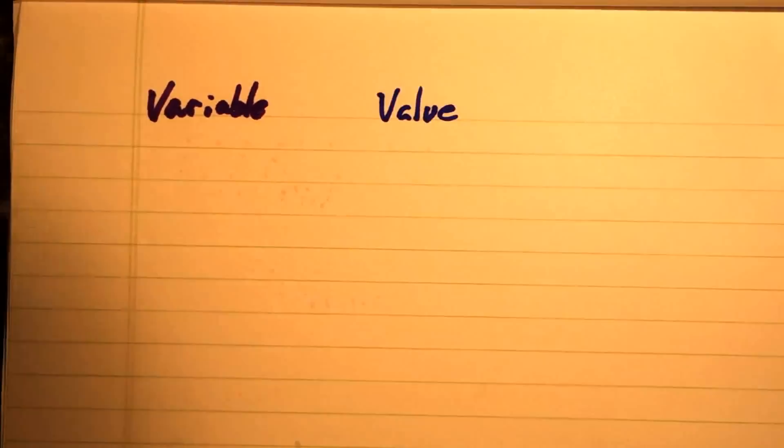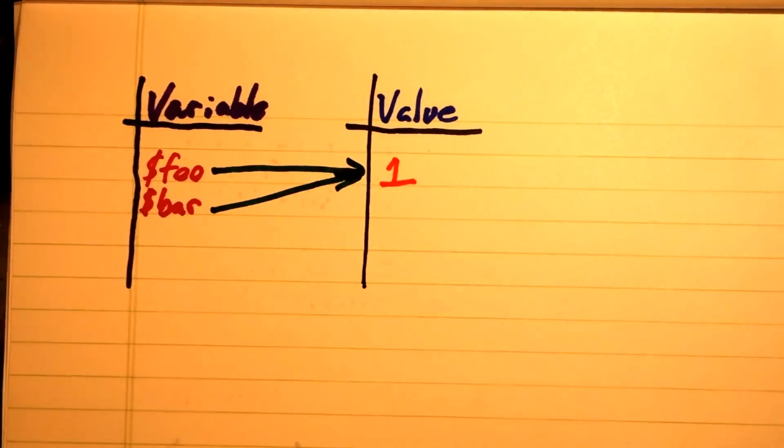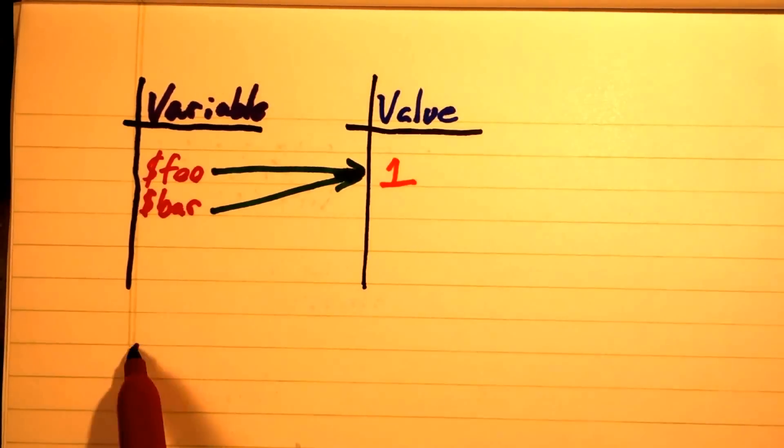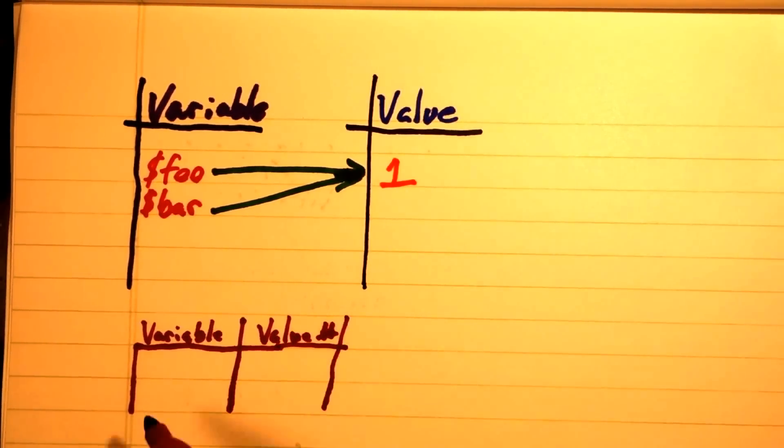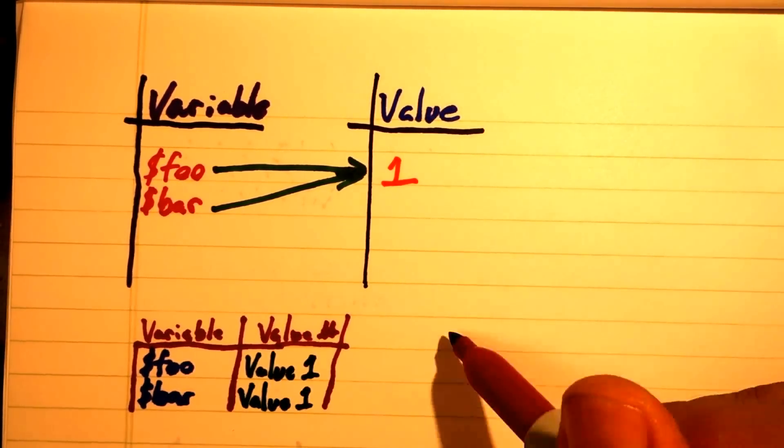The way that PHP solves this problem is by separating the variable from the value container. Variables then become nothing more than pointers to a value. When we copy a variable, we are just copying that pointer.